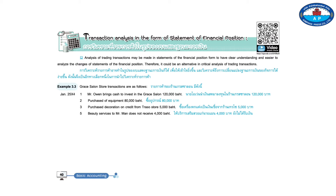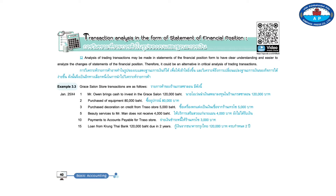Transaction 5: Beauty services to Mr. Man — payment not yet received, 4,000 baht. Transaction 10: Payments to payable of the Trasso Store. Transaction 15: Loan from Krungtai Bank, 120,000 baht, due in two years. Transaction 18: Mr. Chaio withdraws money from the business for personal use, 10,000 baht.